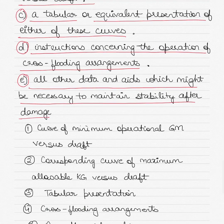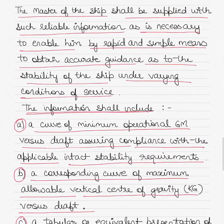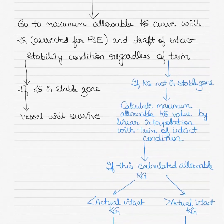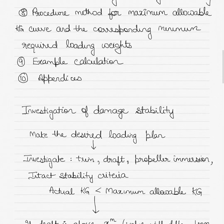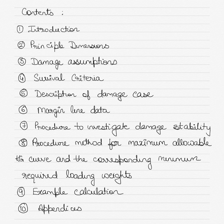To sum up, these are the five items of information required: a curve of minimum operational GM versus draft; a corresponding curve of maximum allowable KG plotted against the ship's drafts; a tabular representation of these two in the form of tables or graphs; cross-flooding arrangements; and any other applicable information. Now I'll go back to show you the contents of the damage stability booklet.